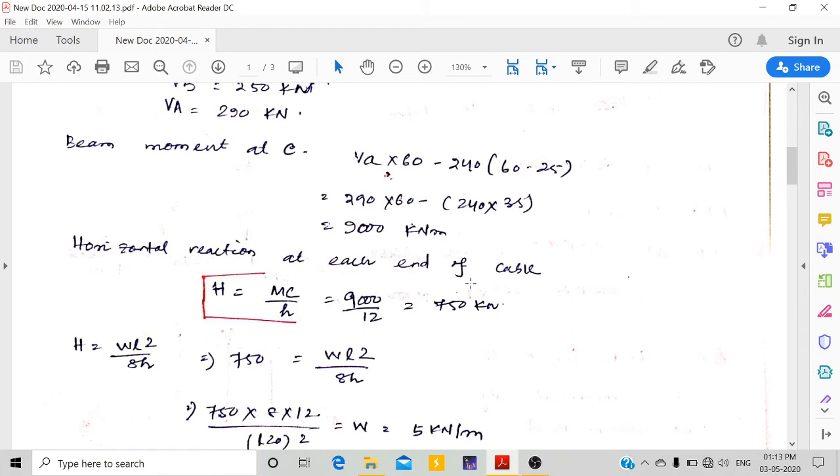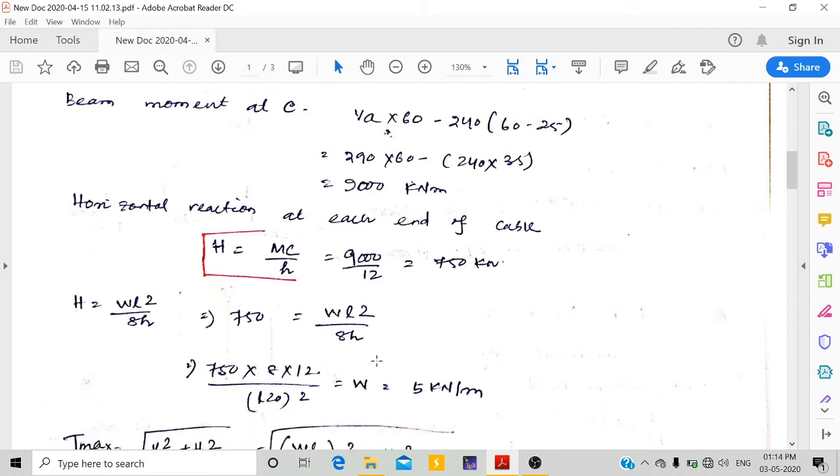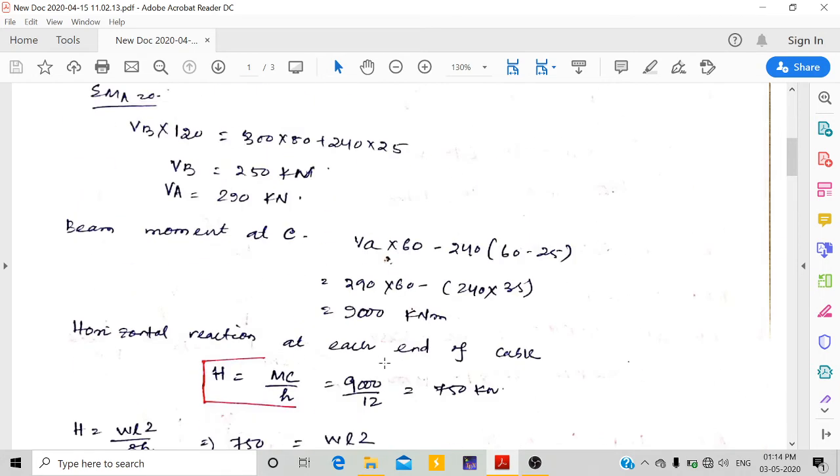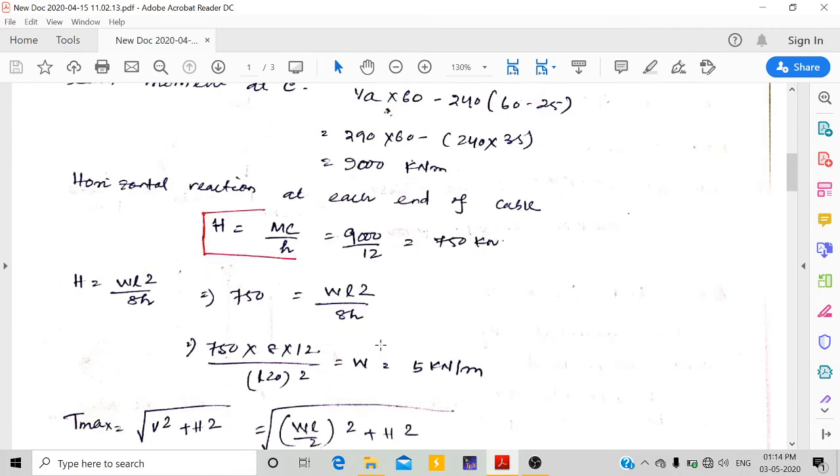We know that H equals w·L² divided by 8h, where the suspension wire is loaded with UDL. From this we can calculate the small w, which is the UDL acting on the hangers.